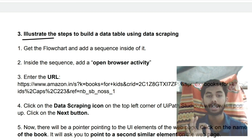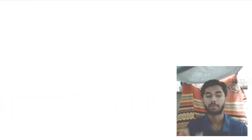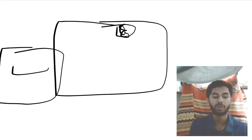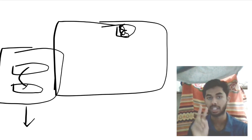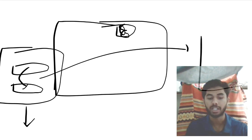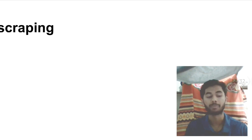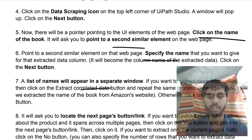Moving on to the third question: illustrated steps to build a data table using data scraping. To build a data table using data scraping, there is a screen where you will find the desktop data scraping option. When you click data scraping, a website opens — you select one piece of data, then a similar second piece of data, and after that it automatically detects the pattern and selects all matching data. When selected, it gets stored inside a data table, which you can then convert to a string or output in a message box. Watch the short tutorial video for full details.